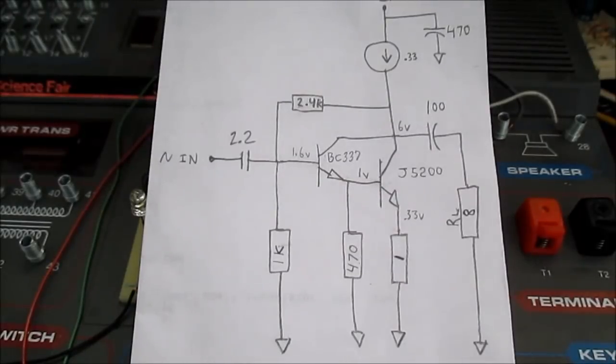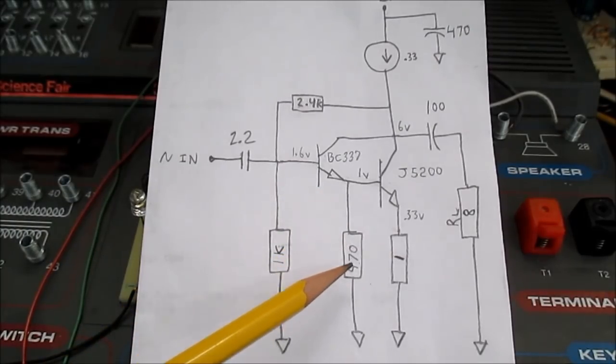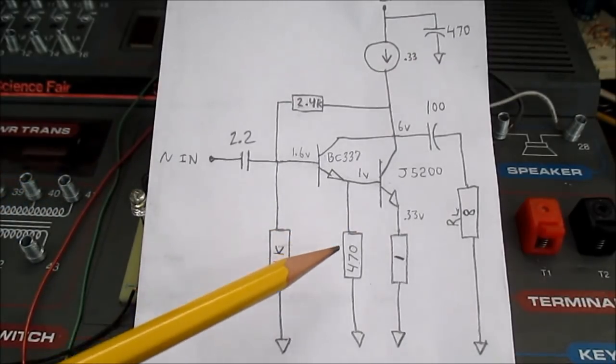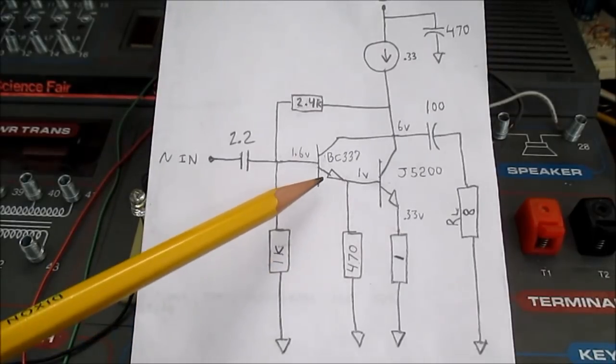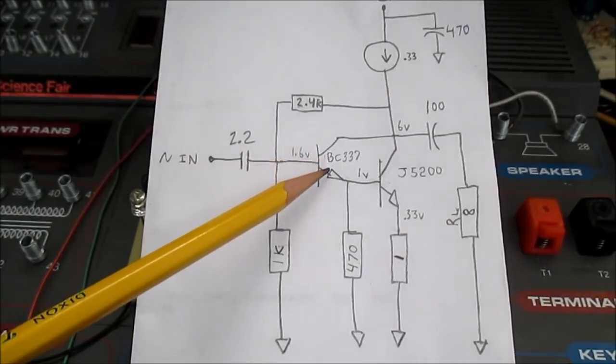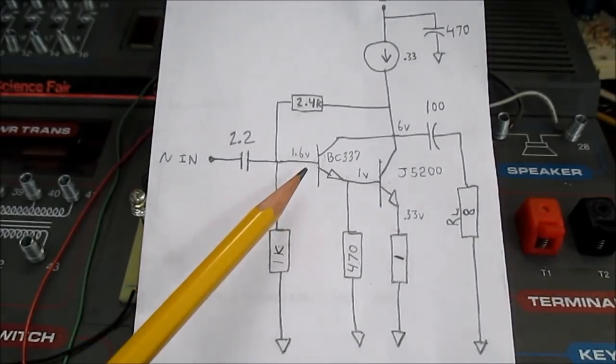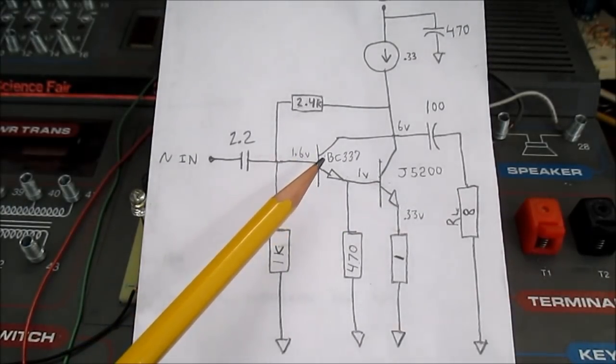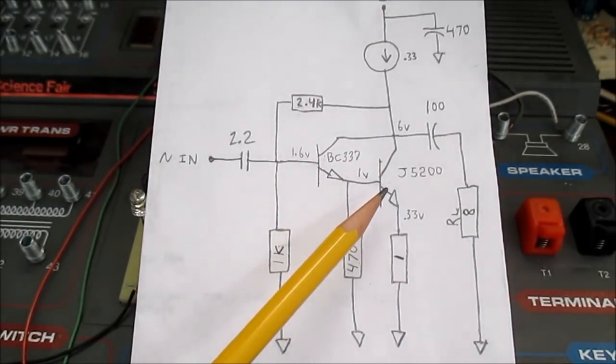In a previous video, in the comments section, someone asked, why did I add this resistor to this Darlington circuit? It's a good question, so I figured I'd make a video about it. So this configuration is a Darlington transistor, where you have a transistor driving another transistor, and it really boosts the gain. The gain of a Darlington configuration is the gain of this transistor times the gain of this one plus the gain of this one plus the gain of this one.